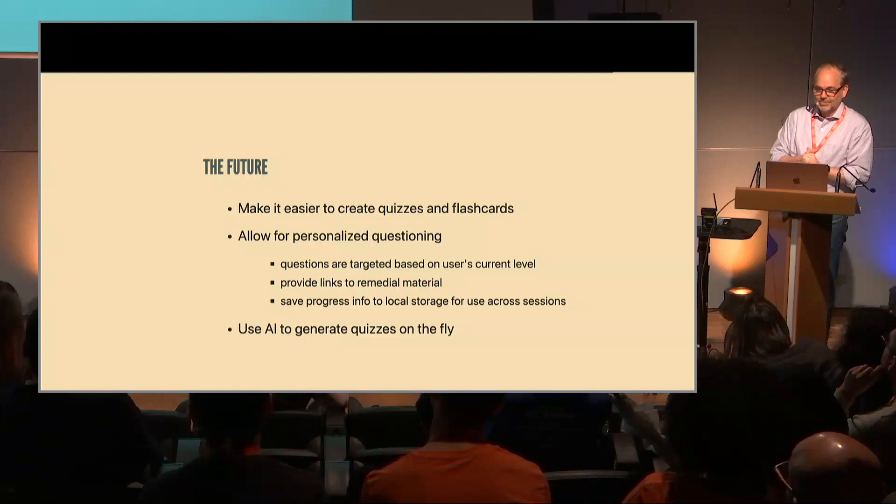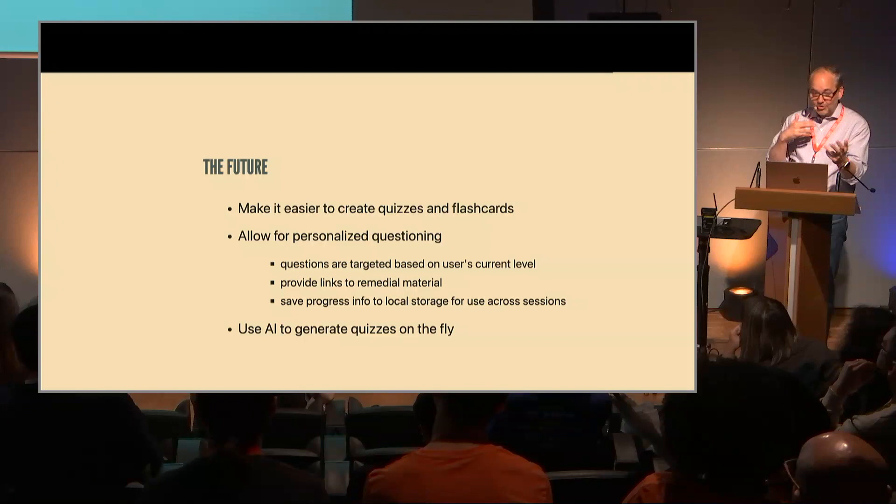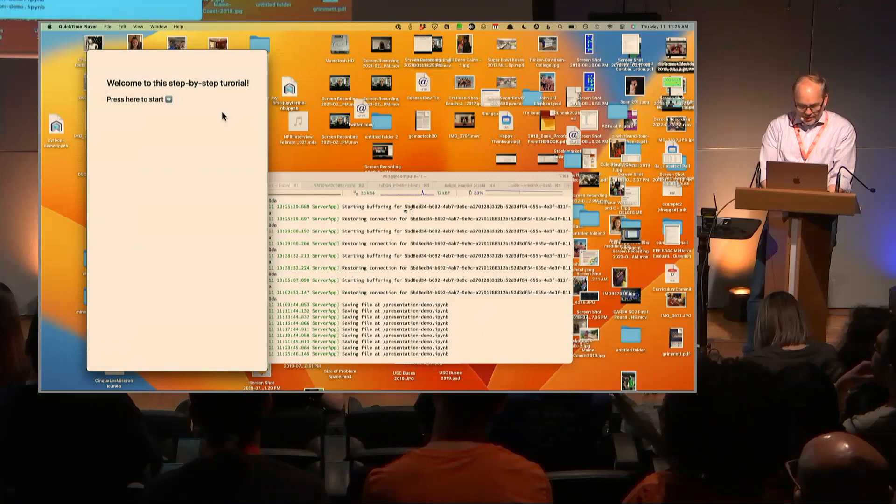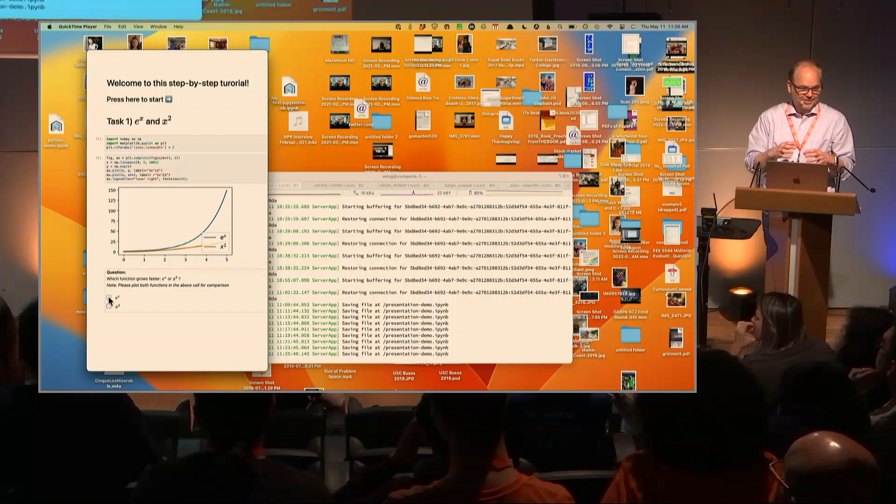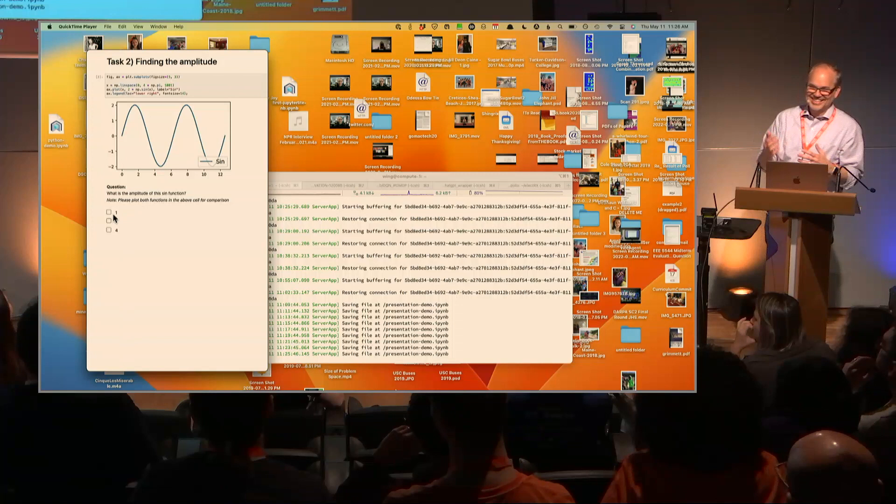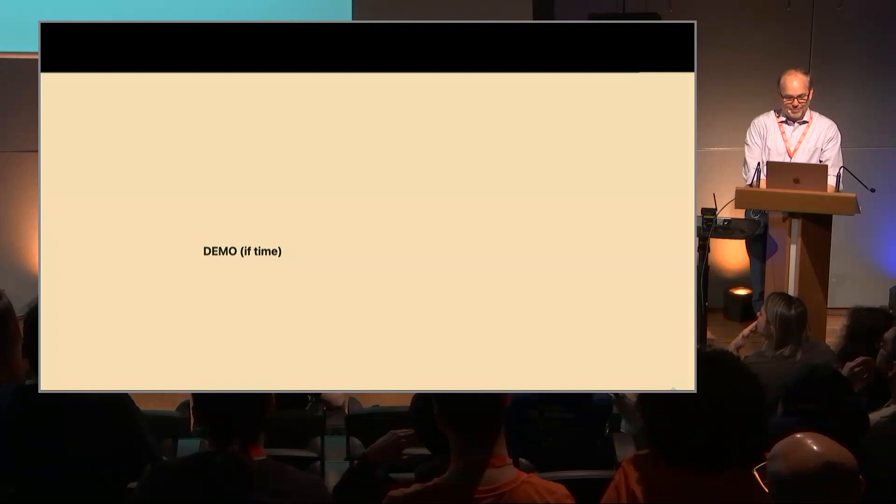There is an ability to dump out student answers to a string that you can verify. What is the future of this? Well, I think there should be easier tools to make some of these things. I'm working on some of that with moving to Markdown versus JSON. Allowing for personalized questioning is something that will be useful. Providing links to remedial material. Saving progress on local storage. This is a tutorial that Jan Hendrik Mueller sent me that shows an idea about what could happen. When you answer the question correctly, then more stuff appears below. I almost got this done yesterday while sitting in sessions, but I didn't quite get my demo working with Jupyter Quiz, but it's on the way.